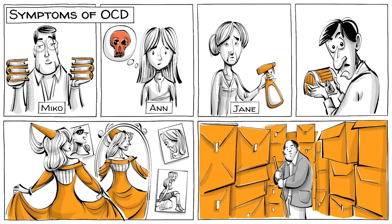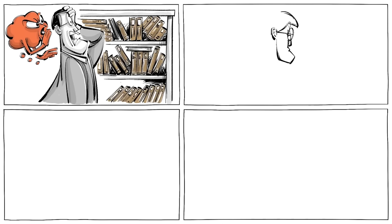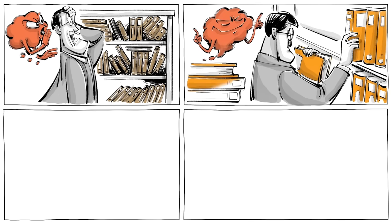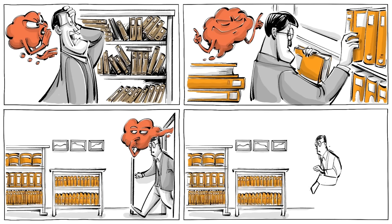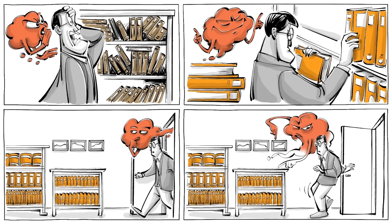Miko, Anne, Jane, and Joe each have their own version of OCD. Miko is obsessed with symmetry and can spend hours sorting books. Whenever he enters his library, he has to leave it the exact way he came in—backward.